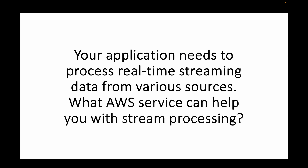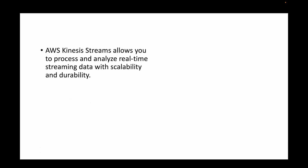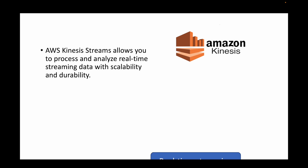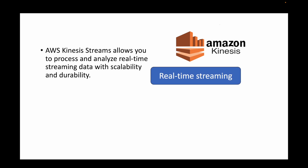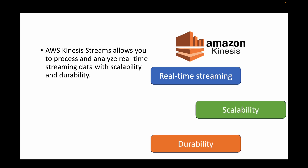The next question is: your application needs to process real-time streaming data from various sources. What AWS service can help with streaming processing? In AWS, whenever we talk about processing real-time streaming data, we have Amazon Kinesis — your streaming service — which helps you process and analyze real-time data as it arrives. It provides scalability and durability, and you can use it to run or generate reports based on real-time data.